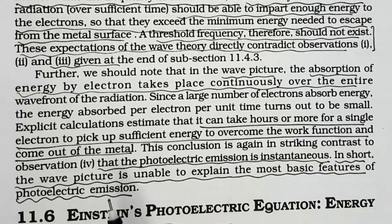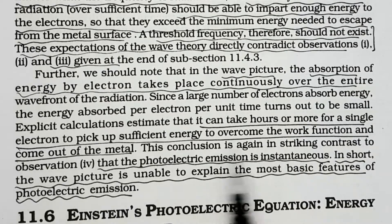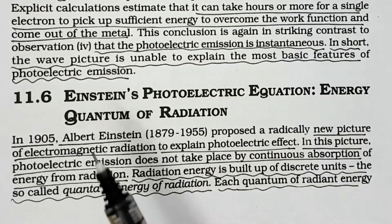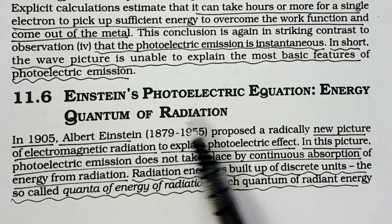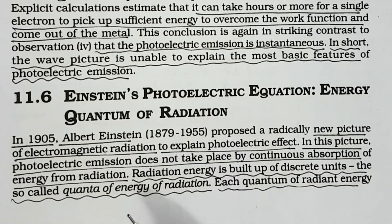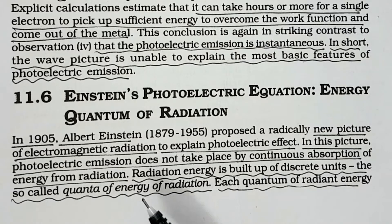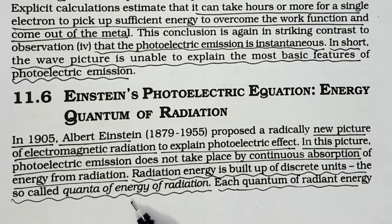These three points show that wave theory fails to explain the most basic features of photoelectric emission. To address this, Einstein proposed a new picture — the particle nature of light, the quantum nature of light — quanta of energy of radiation.